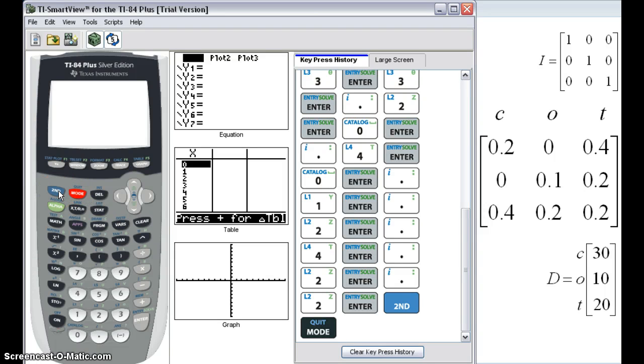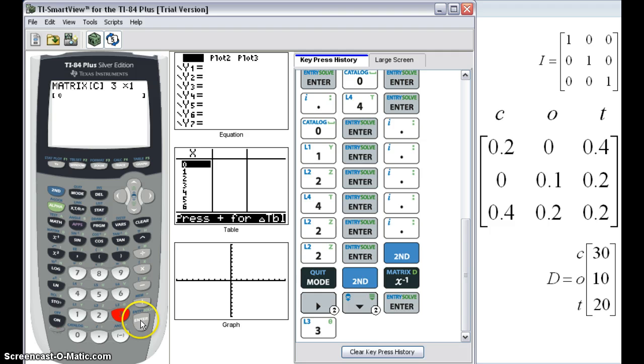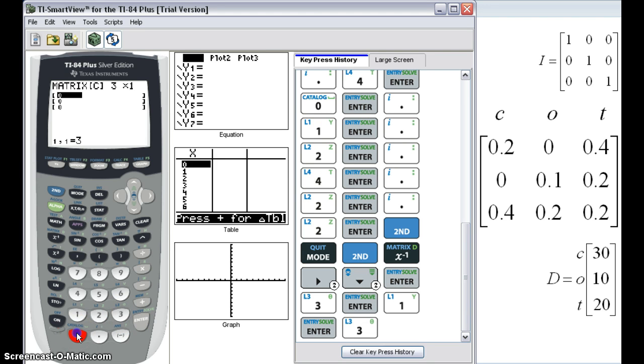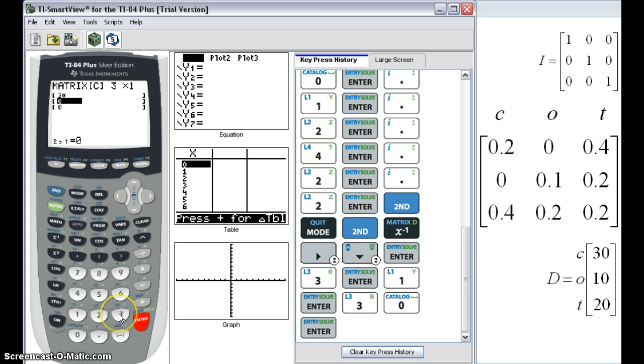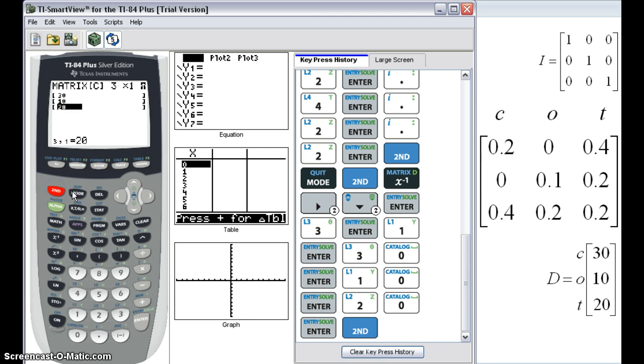I have one more matrix to enter. So second matrix. Arrow over to edit. I'm going to go the whole way down and edit matrix C. And so this is going to be three rows by one column. And I type in my values. And again, I quit. So now I have stored all of the matrix information into my calculator. So next, I want to go back to my equation.